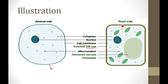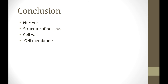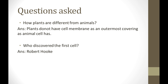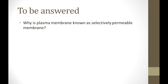So what we have studied today is: nucleus, structure of nucleus, cell wall, and cell membrane. I have asked you a few questions: How are plants different from animals? The major difference is that in animals the outermost covering is the cell membrane, while in plants it is the cell wall. Second question: Who discovered the first cell? That is Robert Hooke. Next question: Why is the plasma membrane known as the selectively permeable membrane? Please answer me, and class, please copy the notes as given in the video. That's all for today, thank you.